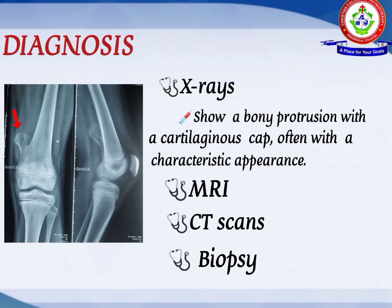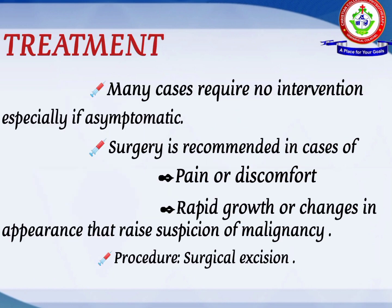Next we see about the diagnosis. X-ray shows a bony protrusion with a cartilage cap, often with a characteristic appearance. Other diagnostic tools include MRI, CT scan, and biopsy.